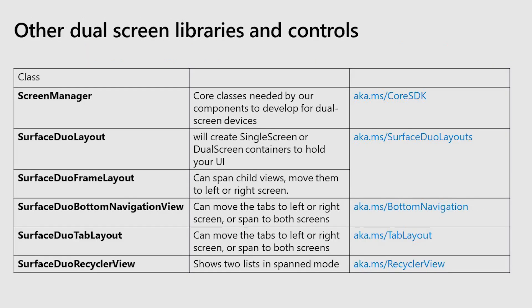We want you to focus on creating important content in your amazing app. So we've added more libraries and dual-screen controls to help you. The Screen Manager is the core library that has classes for screen info. You can add a listener to get notified when the screen mode changes so you can change the layout in your app accordingly. The Surface Duo layout has a single screen mode or dual screen mode. It has two containers when in span mode and one container in a single screen mode. We also have controls for bottom navigation, tab layout, recycle view, and more content is coming.